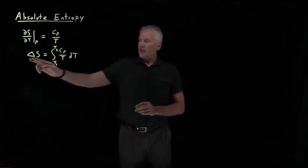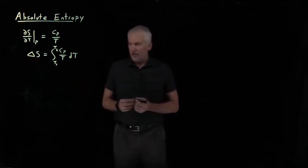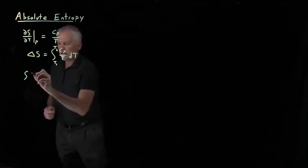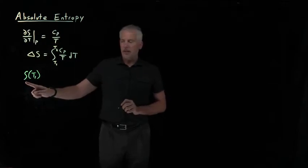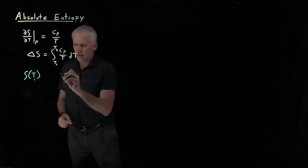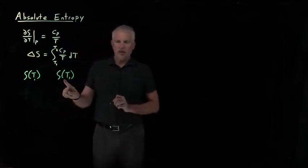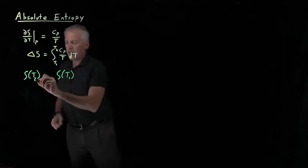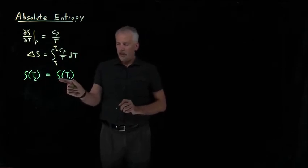This only tells us the change in entropy, the relative difference in the entropy between two cases. So if I have a system that's initially at T1 and has some initial entropy at T1, the entropy after heating it up or cooling it down to some different temperature T2 is that initial entropy